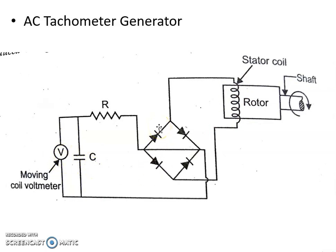In this way, the AC tachometer generator generates an AC voltage which is directly proportional to the angular velocity of the shaft. So these are the DC tachometer generator and AC tachometer generator, which are the main types of electrical tachometers used to measure angular velocity. Other types of electrical tachometers also exist: photoelectric tachometer, eddy current or drag cup tachometer, capacitive tachometer, and stroboscopic tachometers.